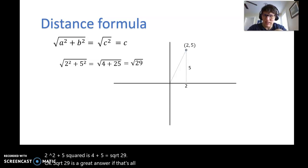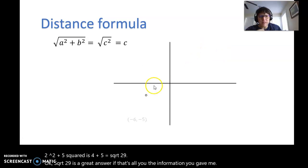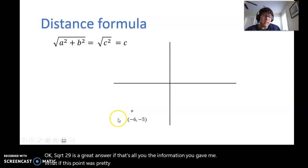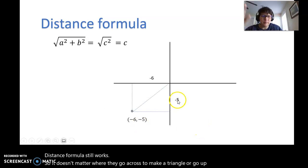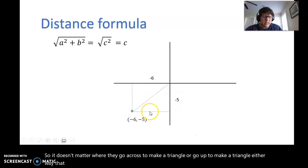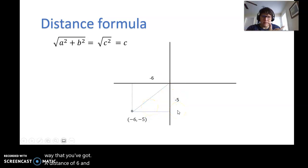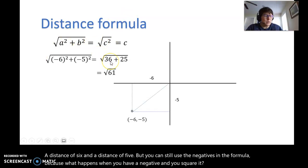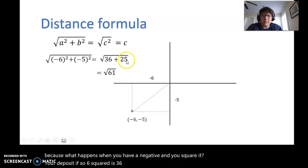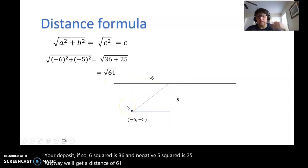What if this point was negative, so negative 6, negative 5? Distance formula still works. It doesn't matter where you go across or up to make a triangle. Either way you've got a distance of 6 and a distance of 5. But you can still use the negatives in the formula because when you have a negative and you square it, you get a positive. So 6 squared is 36 and negative 5 squared is 25. We'll get a distance of square root of 61.